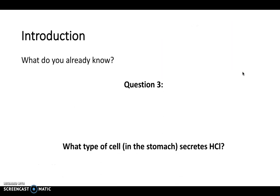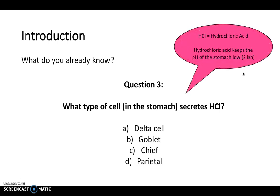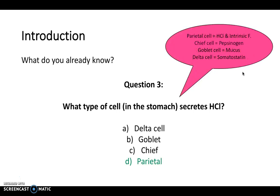And one more question: what type of cell in the stomach secretes hydrochloric acid? Is it the delta cell, the goblet cell, the chief cell, or the parietal cell? The answer is the parietal cell, which also secretes intrinsic factor. Remember that acid keeps the pH of the stomach low at around pH 2. The chief cell secretes pepsinogen, the goblet cell secretes mucus, and the delta cell secretes somatostatin.